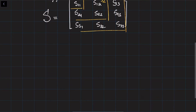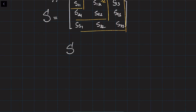Today we are going to discuss a little bit more theoretical tests on positive-definiteness of the matrix. Let's say we are given a matrix S, and we have this eigenvalue problem: S times X equals lambda times X. X is the eigenvector and lambda is the eigenvalue of this matrix.